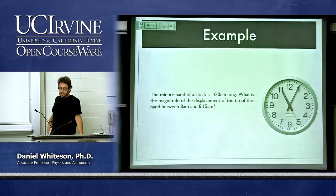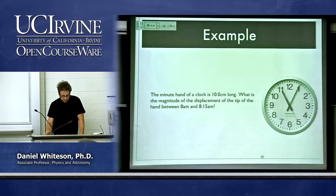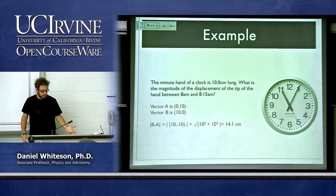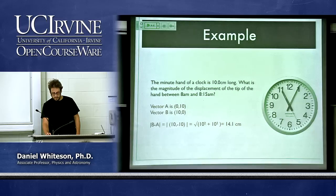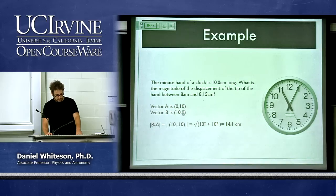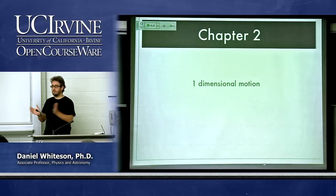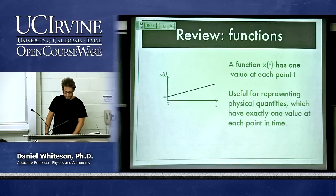Example: the minute hand of a clock is 10 cm long. What's the magnitude of displacement of the tip from 8:00 to 8:15? At 8:00 the tip is at position A = (0, 10); at 8:15 it's at B = (10, 0). The displacement vector is B − A = (10, −10). Its magnitude is √(10² + 10²) = 10√2 cm — the straight-line distance from start to finish.